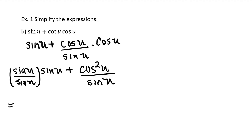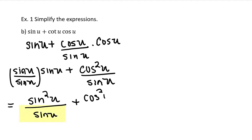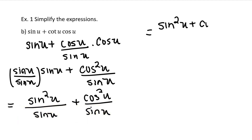Sine u times sine u for the numerator is sine squared u, and that's still over sine u. We have a common denominator for these two fraction terms, so we can write it over the same denominator. We'll write this as sine squared u plus cosine squared u divided by sine u.